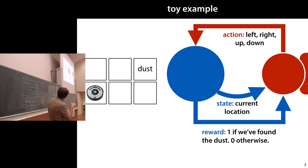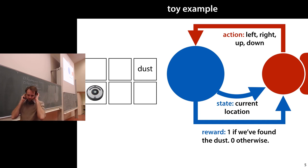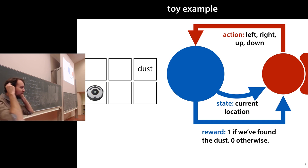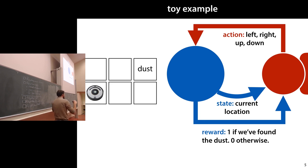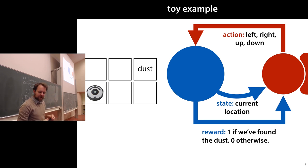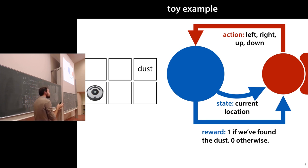Obviously this is just a basic path-planning problem, and there are much simpler ways of solving it. It's the simplest possible reinforcement learning problem we can think about — there's not really a lot to learn because we just have some dust and the environment is stable, but it's a simple starting point.